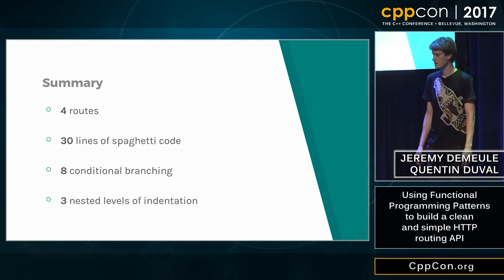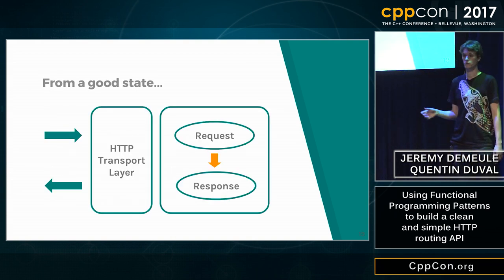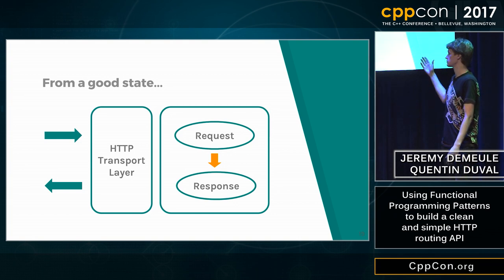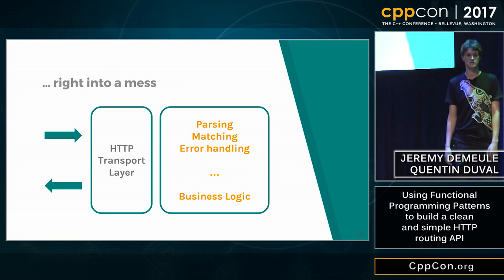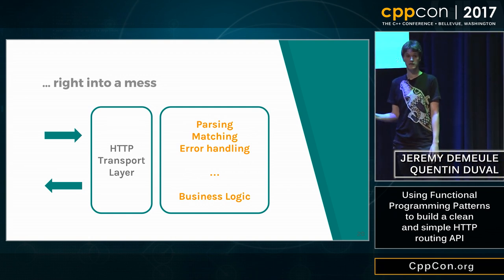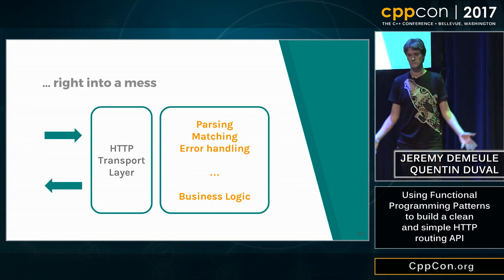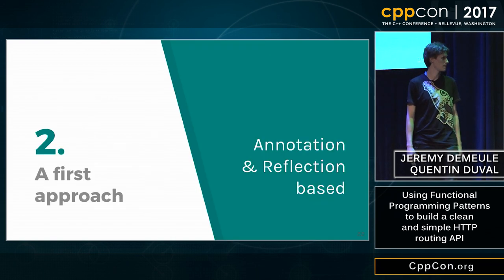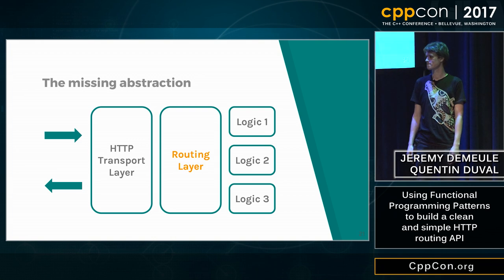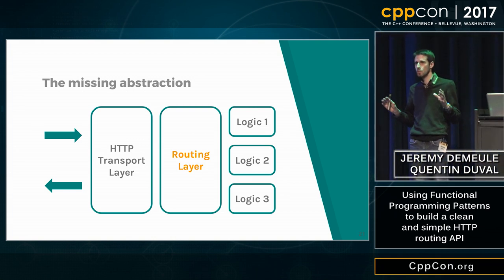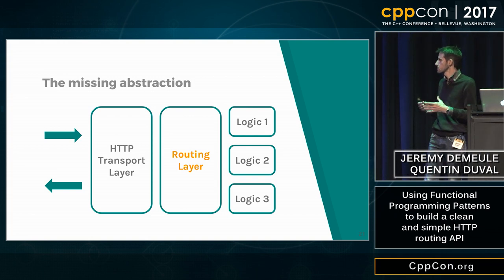This is a mess. We started from an architecture which was pretty simple, where we were supposed to transform requests into responses. We ended up with a mess in which we have parsing, matching, error handling, and some business code. What we are missing is an abstraction for the routing part. As we saw, the manual routing only works for very few routes and is not scalable. So we will explore several approaches.